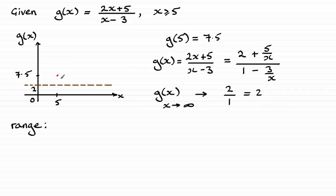So our graph is going to go from 7.5, and as x increases from 5, it's going to approach that asymptote there of y equals 2.